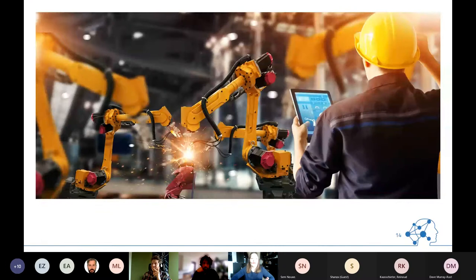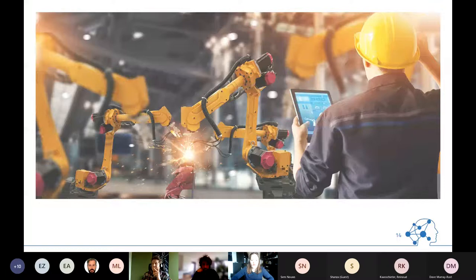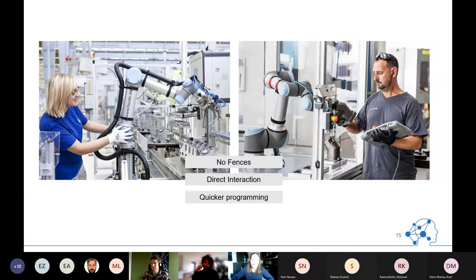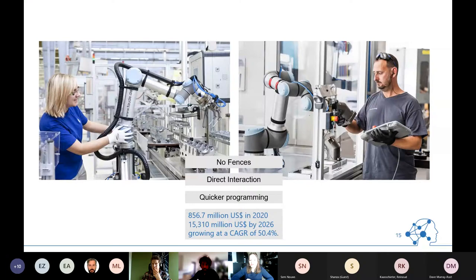This is currently changing because of collaborative robots — cobots — which are designed so humans can work in close interaction with them. We don't require safety fences anymore; we can have direct interaction and theoretically quicker programming. The market is increasing a lot in this area because these small robots can take away small manufacturing tasks and they're much cheaper.